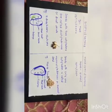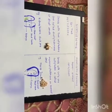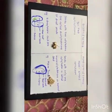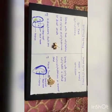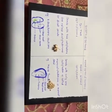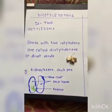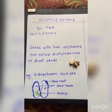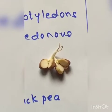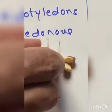Now we are going to study the difference between dicotyledons and monocotyledons. Seeds with two cotyledons are called dicotyledons or dicot seeds. Examples are kidney beans, chickpea, etc. Here I have shown an example of chickpea where you can see that it has two cotyledons.